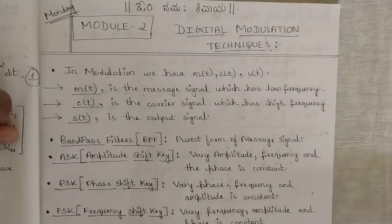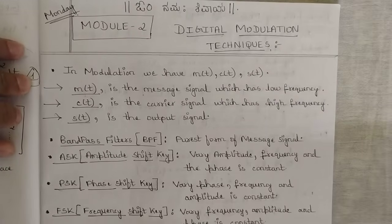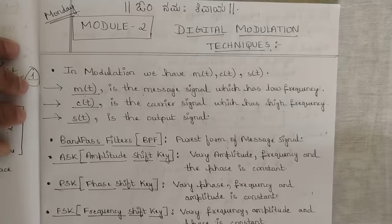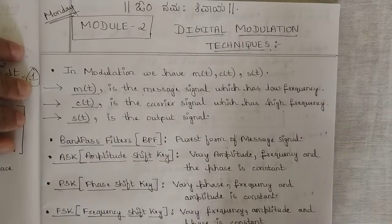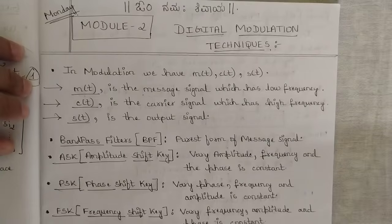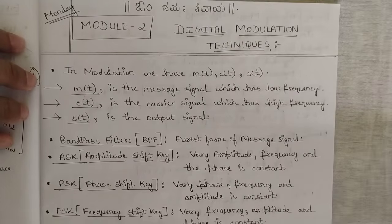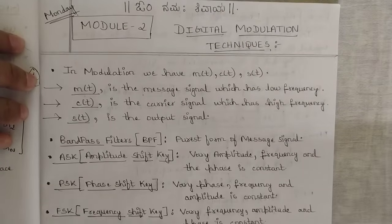Welcome everyone to this new video. We are going to be starting Module 2. Module 1 covered all the concepts as per the syllabus — it was not very complicated and there were not many problems. In this module also there are no major problems, though there are some error probability topics and derivations related to digital modulation techniques which may be asked. The actual complex problems start from Module 3 onwards. Stay tuned as we cover all the concepts in Module 2.